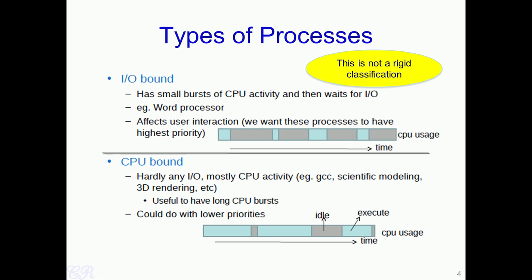For example, Microsoft Excel behaves both like an IO bound as well as a CPU bound process. When we are actually entering data into the various cells in Excel, it acts as an IO bound process with small CPU bursts and large times of IO cycles. On the other hand, when you are actually computing some statistic on the data entered, Excel will behave like a CPU bound process, where there is a large portion of CPU activity.